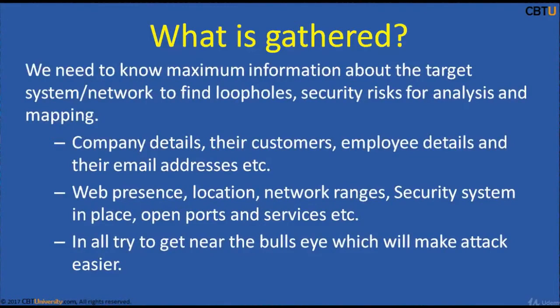What is gathered during footprinting? We need to know maximum information about the target system network to find loopholes and security risks for analysis and mapping. We need the company details, their customers, employee details, email addresses, web presence, location, network ranges, security systems in place, open ports and services. We also need to know what projects they have handled, new projects they have bagged, and financial and legal documents of the company.